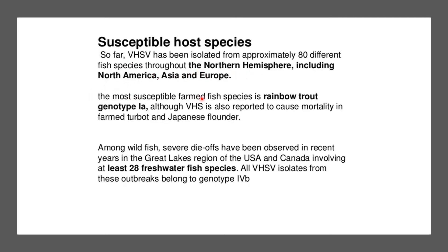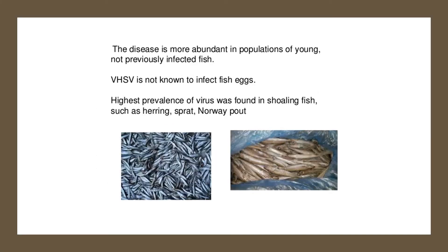The most susceptible farmed species is the rainbow trout, genotype 1a, although VHS is also reported to cause mortality in farmed turbot and Japanese flounder. The disease is more abundant in populations of young, previously uninfected fish. VHSV is not known to infect fish eggs. Highest prevalence of the virus was found in shoaling fishes.